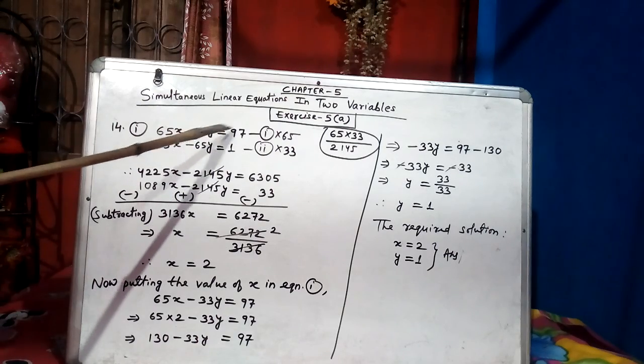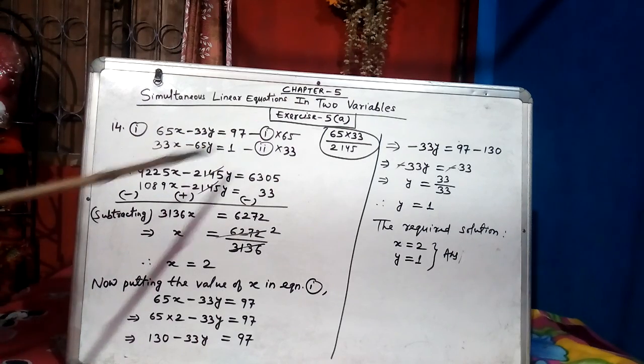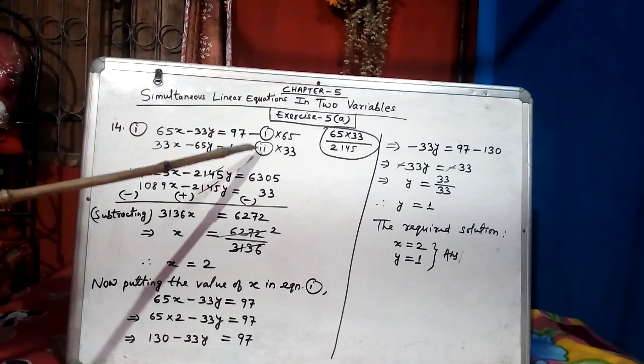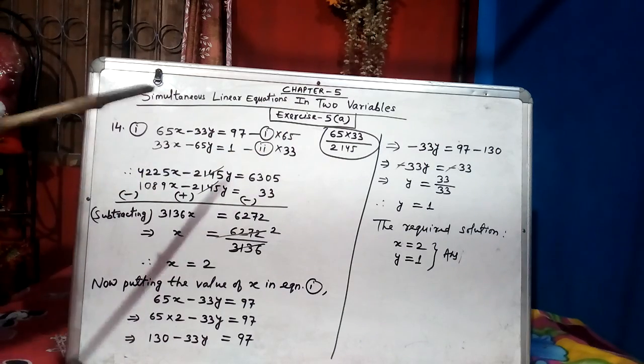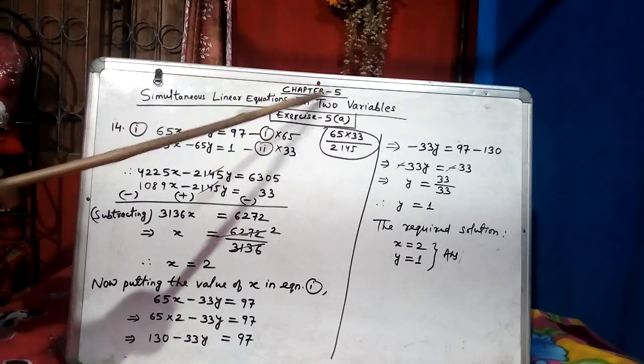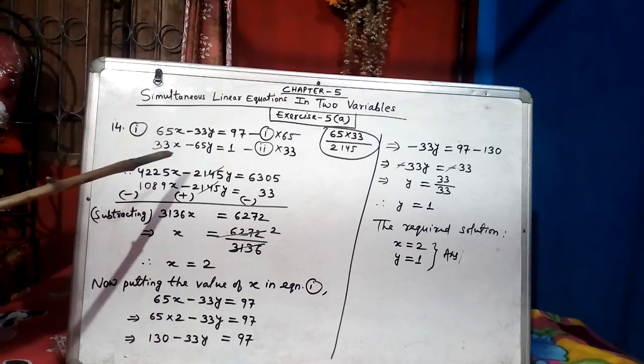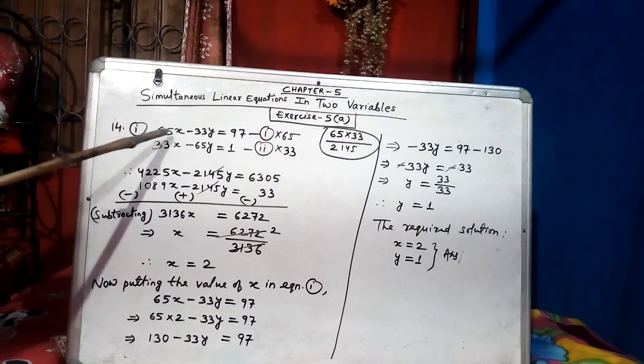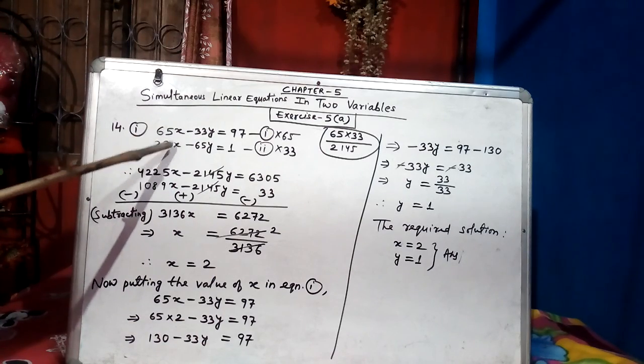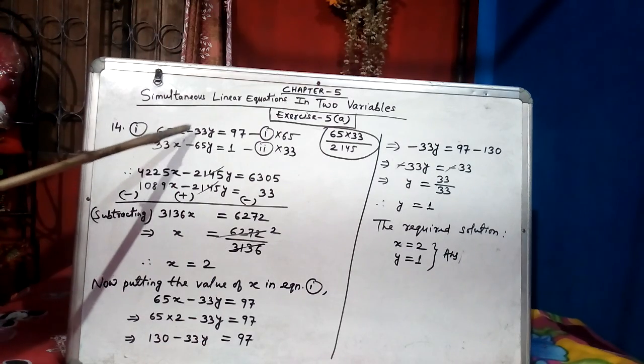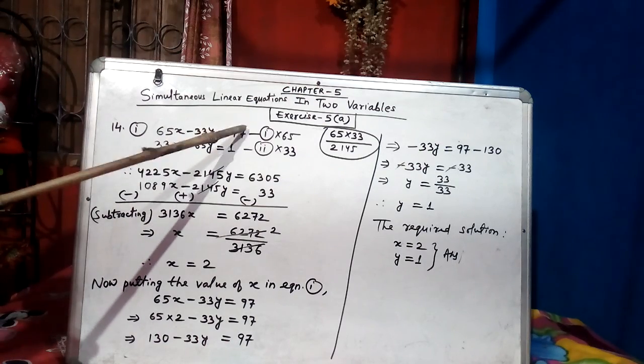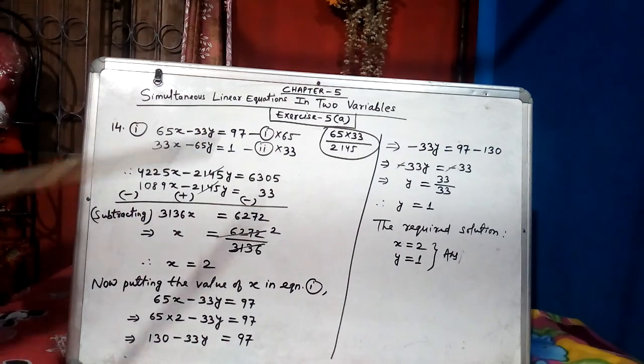65x minus 33y equal to 97 is equation 1. 33x minus 65y equal to 1 is equation 2. We have to find the value of x and y in this question. As it is 2 variables, x is first variable, y is second variable and this equation is perfect. As first position goes to x, both the equations have got x at the first position, second position goes to y and here also there is y, and after equal to constant number. So everything is perfect, equation 1, 2.